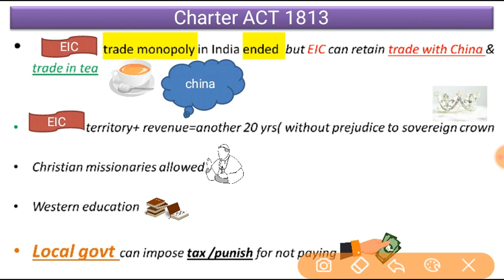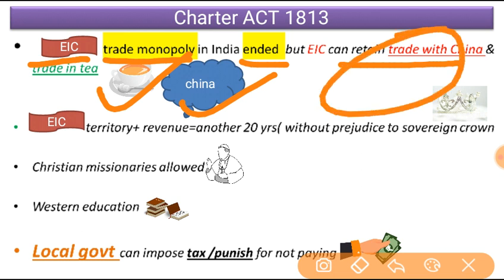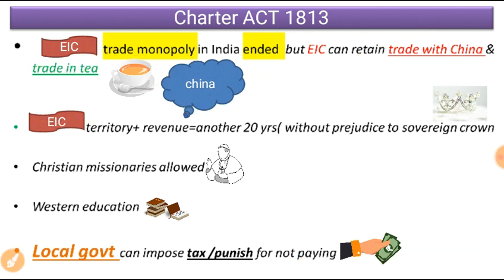Charter Act 1813 — 20 years later — is very very important. In this Act, the trade monopoly in India ended. The East India Company, who had the trade monopoly, it is now over. The British Parliament said to the East India Company: your trade monopoly is over and it is now open to all British merchants. But you can retain two things: trade with China and trade in Tea — these two you can retain.